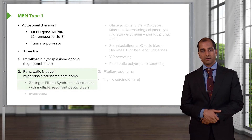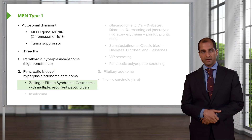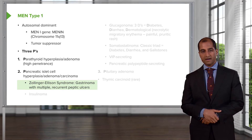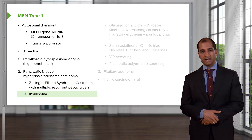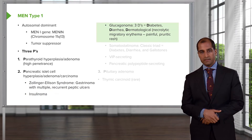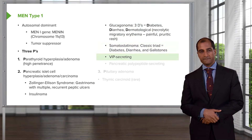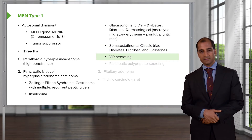The 'pan' will be pancreatic islet cell tumor. You've probably heard of a gastrinoma known as Zollinger-Ellison syndrome, where your patient is suffering from recurrent refractory peptic ulcers. Also: insulinoma, glucagonoma, somatostatinoma, and VIPoma — all part of your pancreatic islet cell tumors.